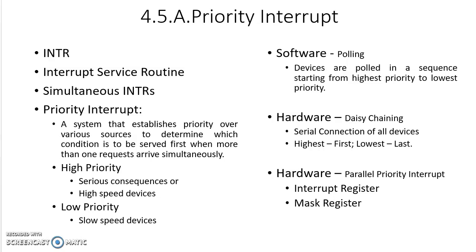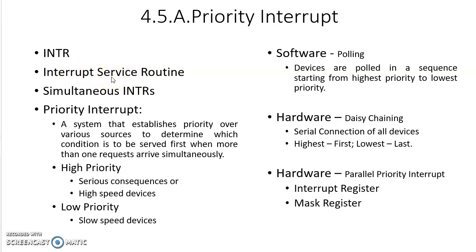In the previous topic we had seen different types of modes of data transfer. Now we are going to look at priority interrupt. An interrupt is a request received by the CPU from input-output devices. Whenever the CPU receives an interrupt request, it is supposed to provide service, and this service is fixed for every interrupt — that is why it is called an interrupt service routine.